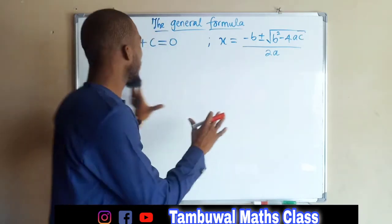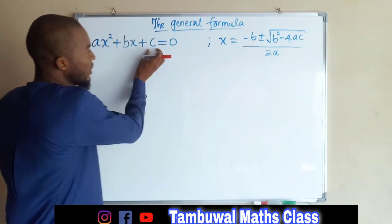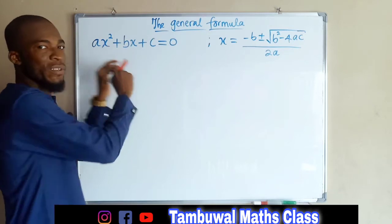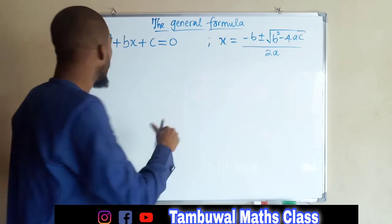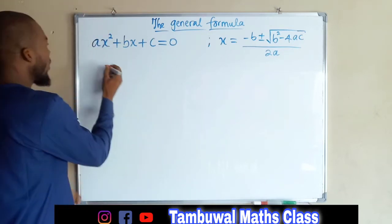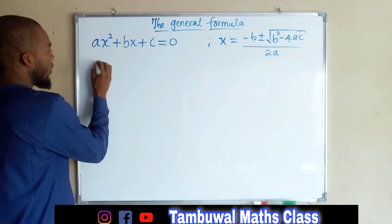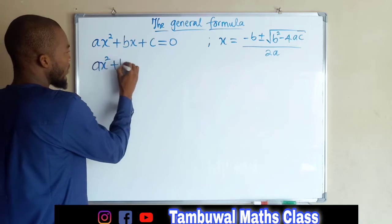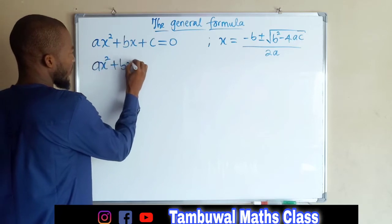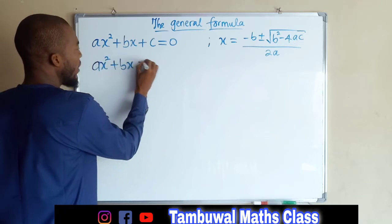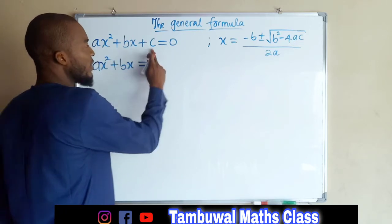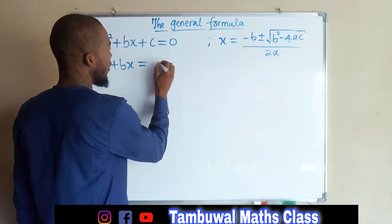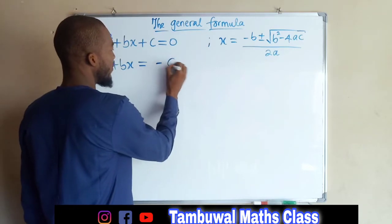So the first step, we are going to take the constant to the right-hand side because we only need the first and the second term. So we have ax squared plus bx equals — since it crosses the equality sign, it becomes negative c.